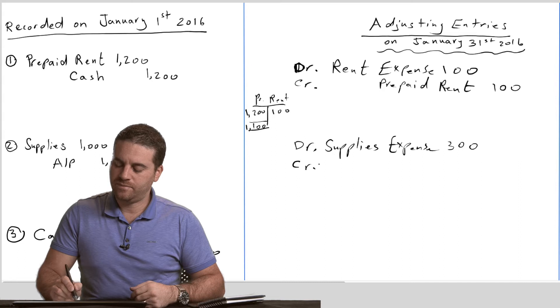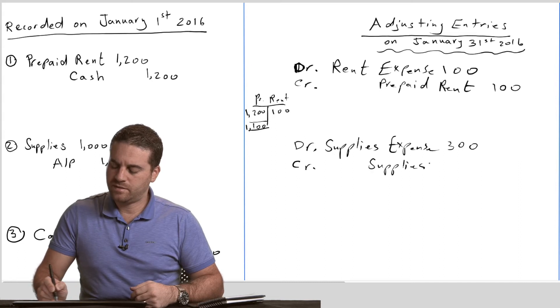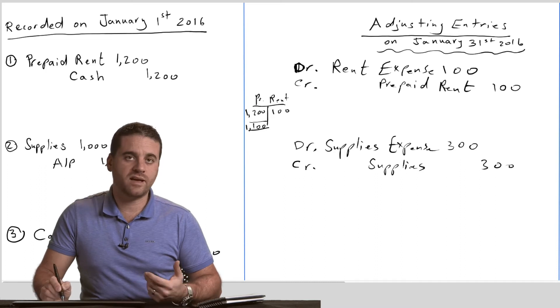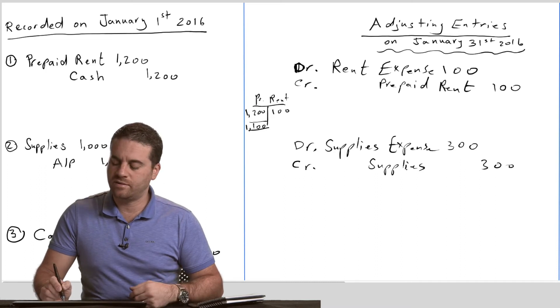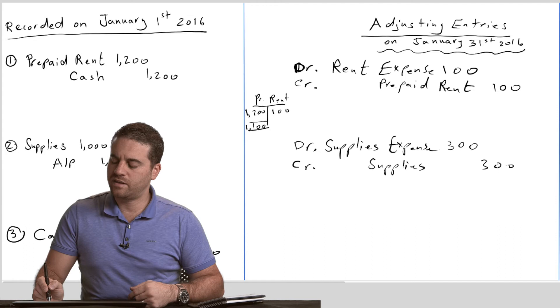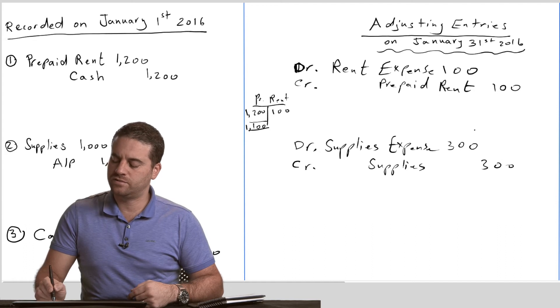We credit supplies $300, because supplies are decreasing — it's an asset, so it goes down with a credit, decreasing by $300. That amount goes to an expense account.